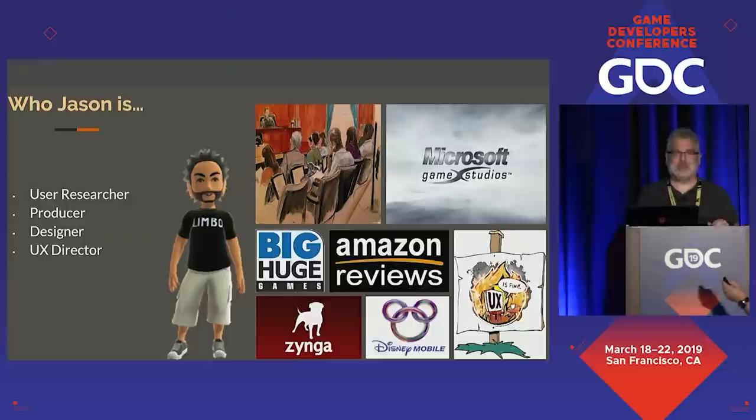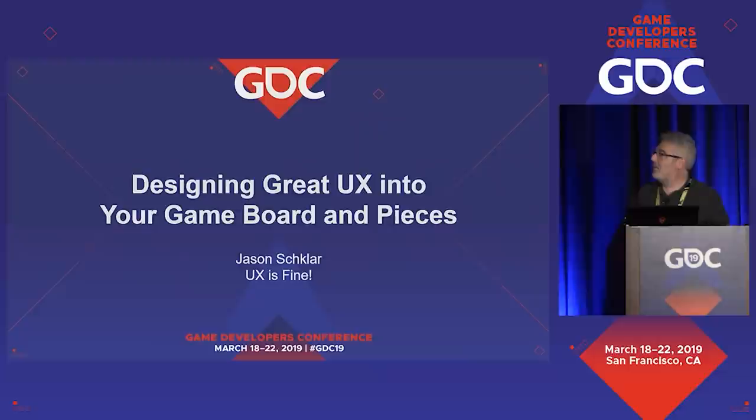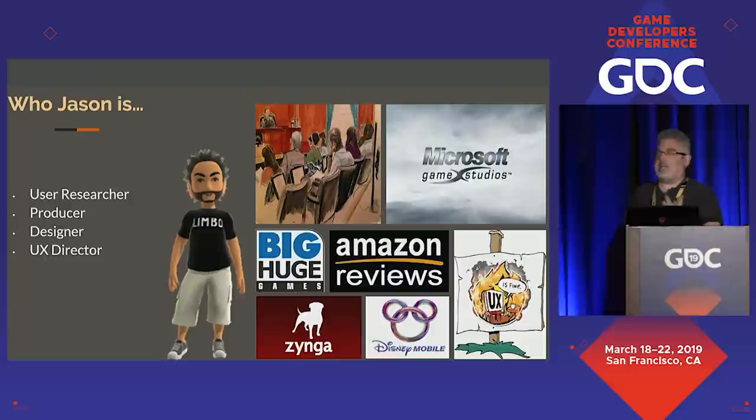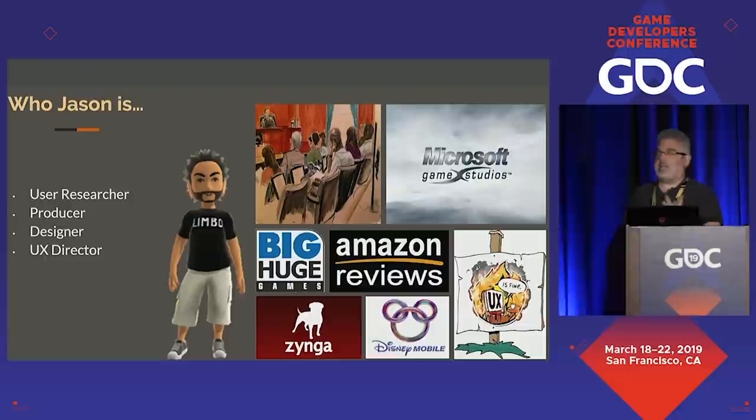At Amazon I learned things like how to convince people to write better reviews, or to convince people who'd never written a review before to write one, or to upload a video demonstrating a product — and on the consumer side, help surface that information to purchasers in their buying pipeline so they can make a more informed purchase decision. From there I went to Zynga for social games, then Disney Mobile for mobile games, and for the past five years or so I've been a consultant.